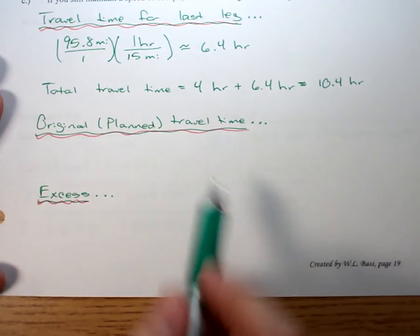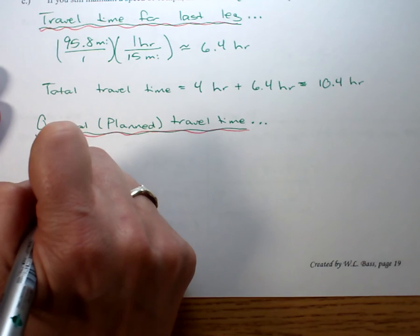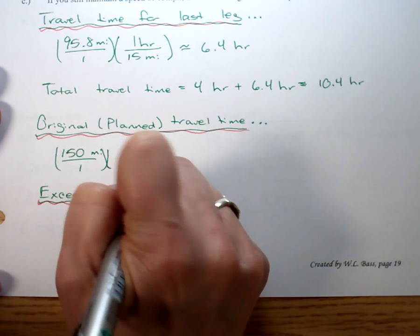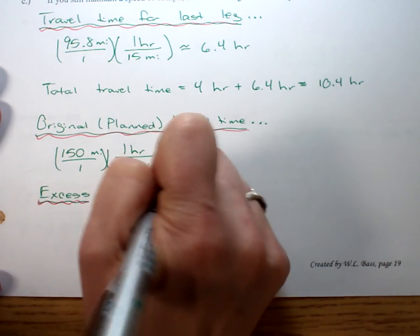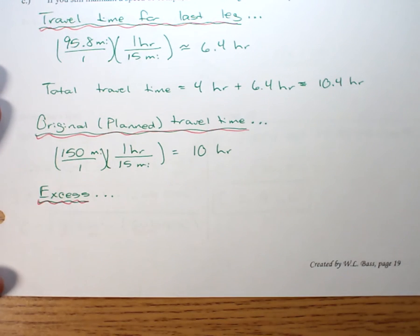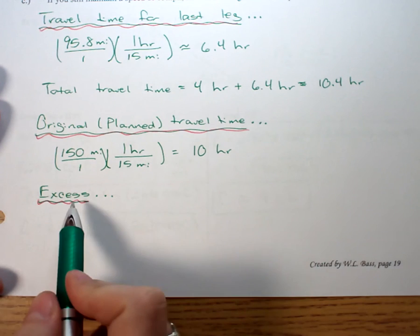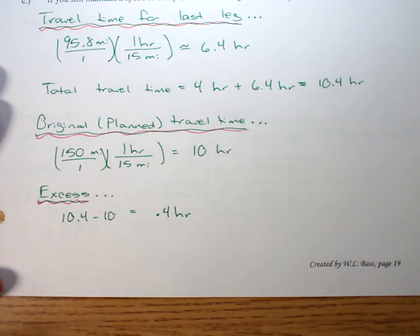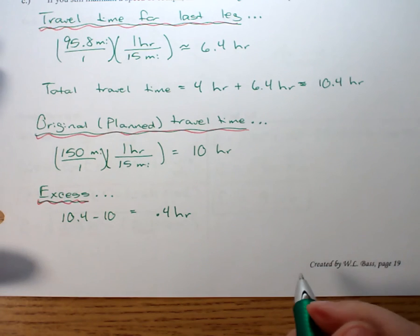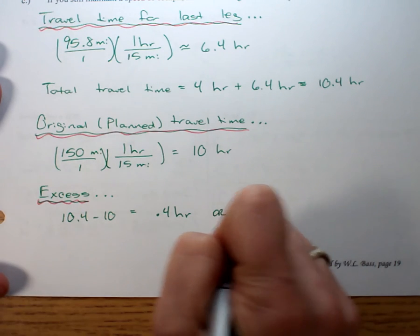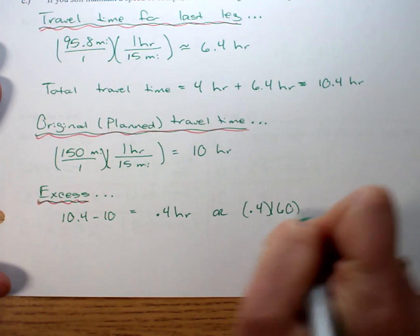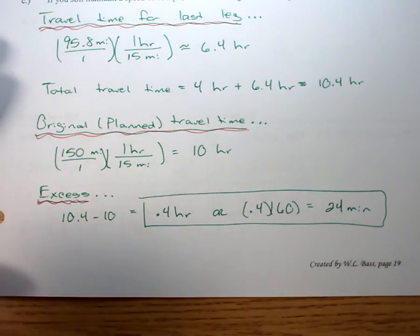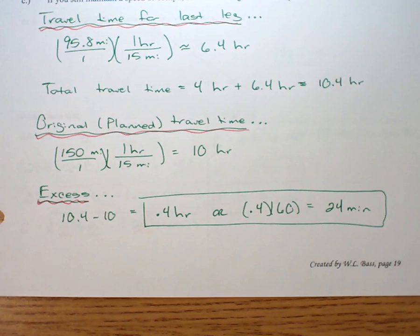The original planned trip was 150 miles at 15 miles per hour for a nice 10 hours. Again, I really feel like an airplane would have been a good choice. So our excess, we're just going to subtract: 0.4 hours. If somebody told me it was going to take 0.4 hours I would think they were kind of weird, so I would want to convert this to minutes, which is 24 minutes. Benissimo, well done, and we'll do a little bit more in class tomorrow.